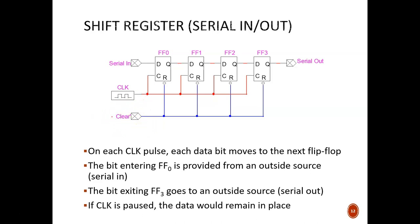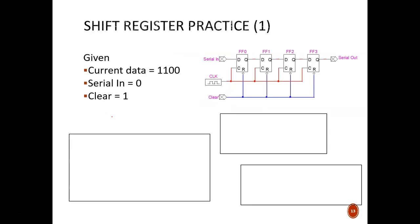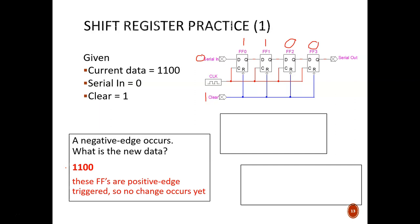Let's explore the operation a little further by asking a couple of questions. Best is if you pause the video after each question and try to predict the answer. Assume that the register currently holds the values 1100 from left to right. Also, serial in is held at zero, and clear is an inactive 1. First question: A negative edge occurs. What is the new data? The answer is 1100. Nothing has shifted. These flip-flops are positive edge triggered, so no change occurs yet.